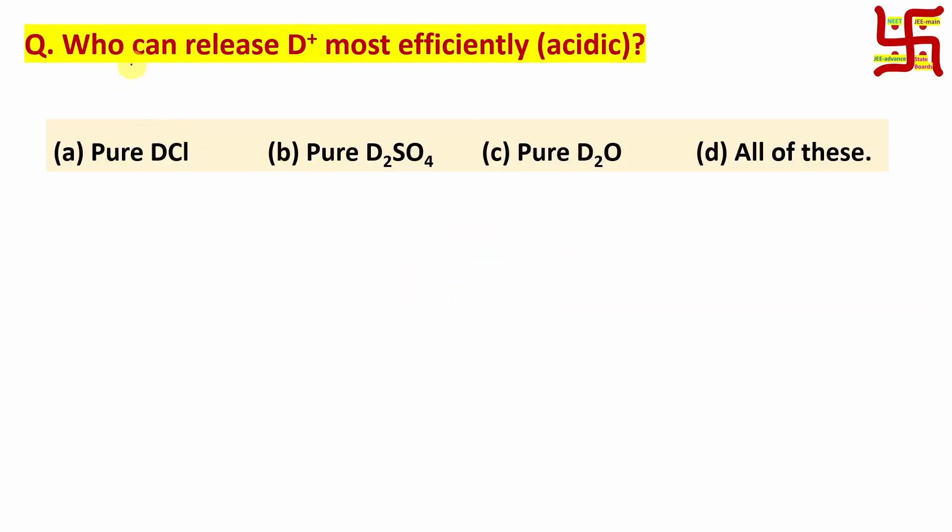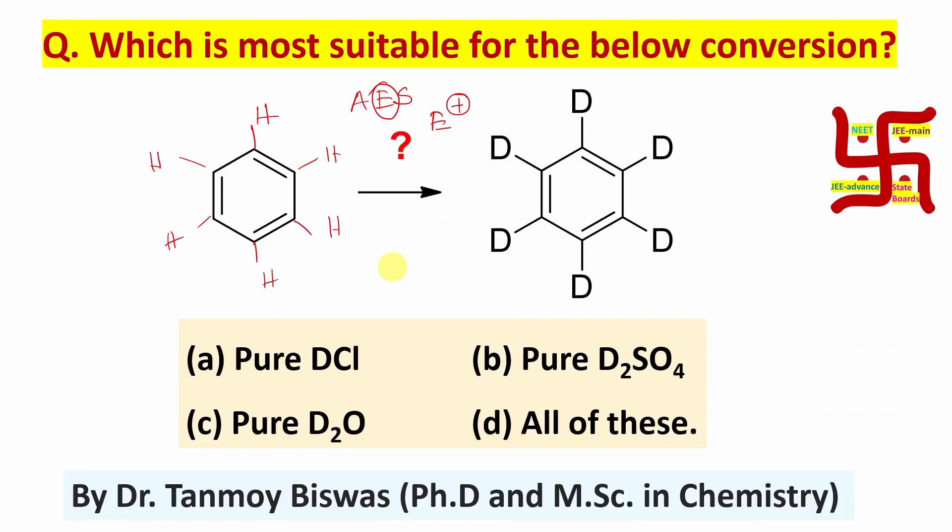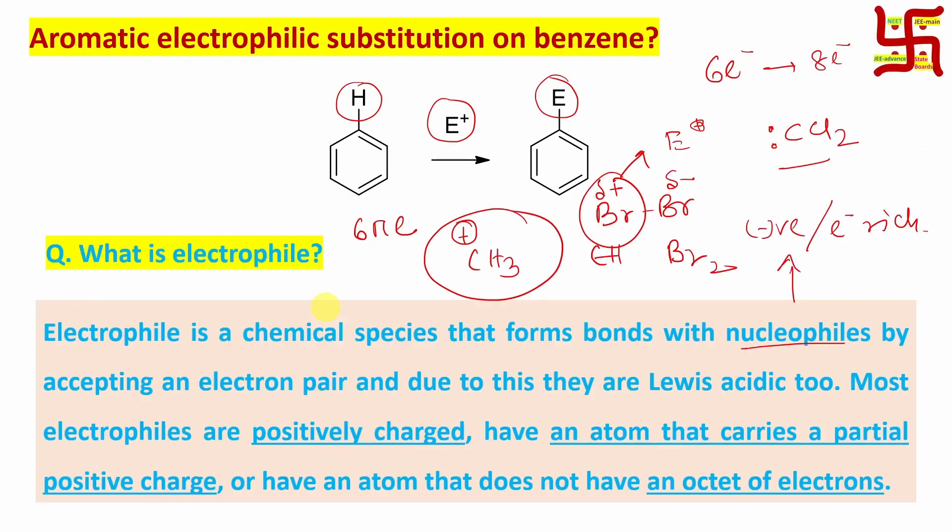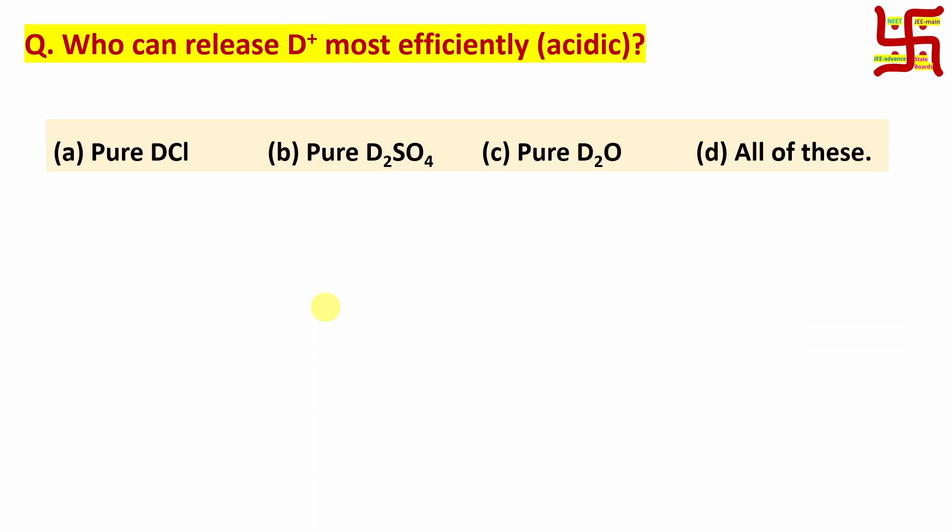So who can release this D+ most efficiently? Because we are talking about electrophile, and in the previous example, hydrogen is replaced by deuterium. How can we achieve it? Using D+, which is actually the electrophile. If you look at D+ very closely, it is an isotope of hydrogen where in the nucleus there is one proton. Will pure DCl act as electrophile? No, because remember DCl is actually a covalent molecule with a stronger covalent bond.